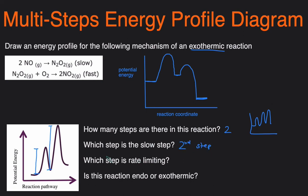Next question, which step is the rate limiting step? Well the slow step is the rate limiting step. So since the second step is slow the second step will be the rate limiting step.